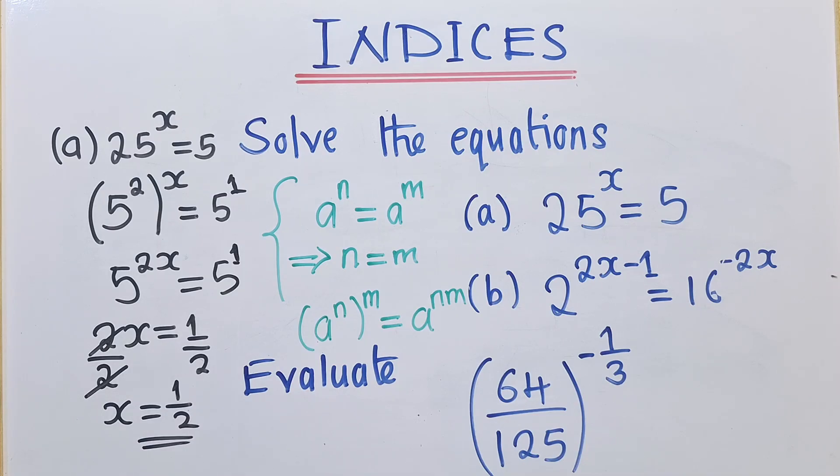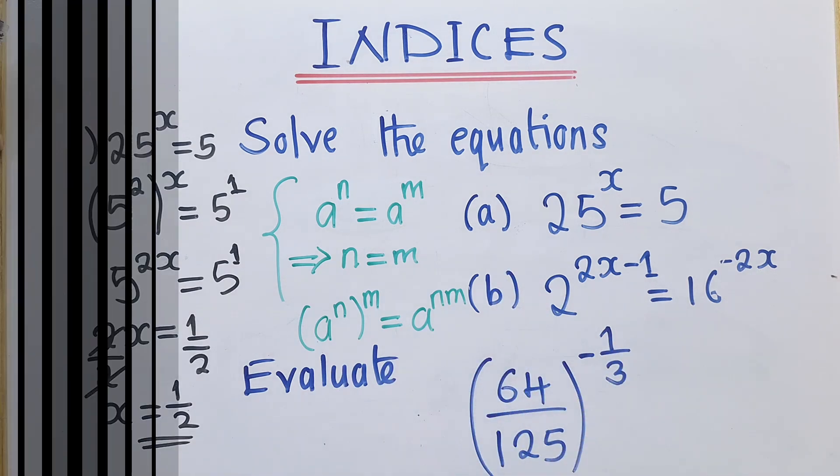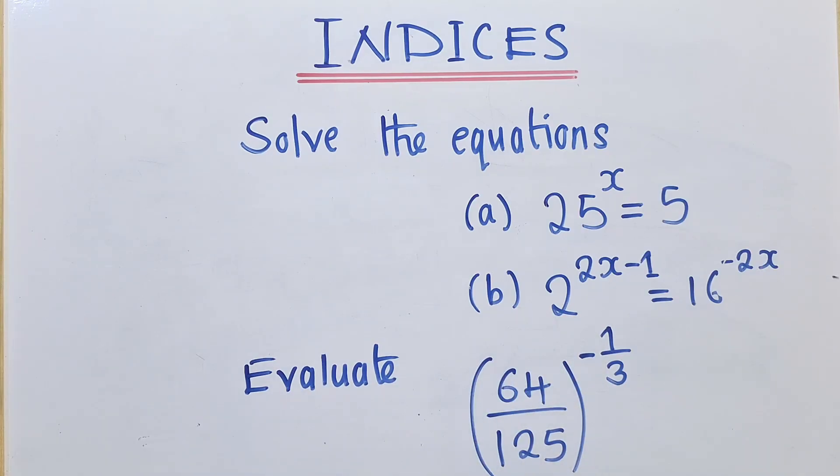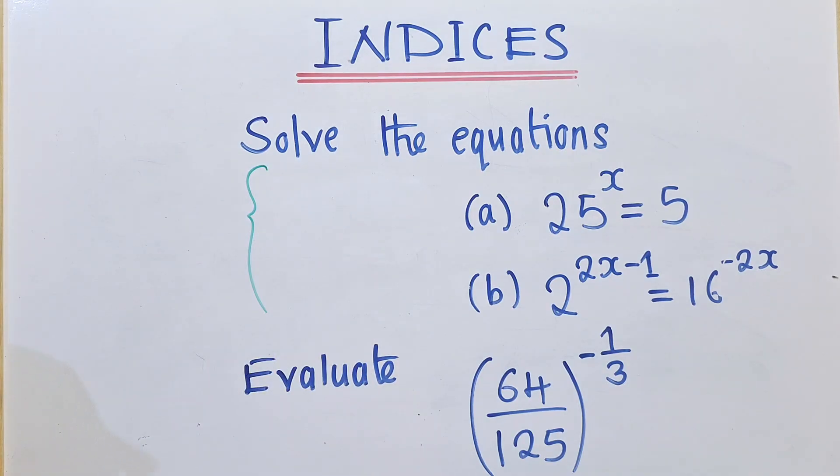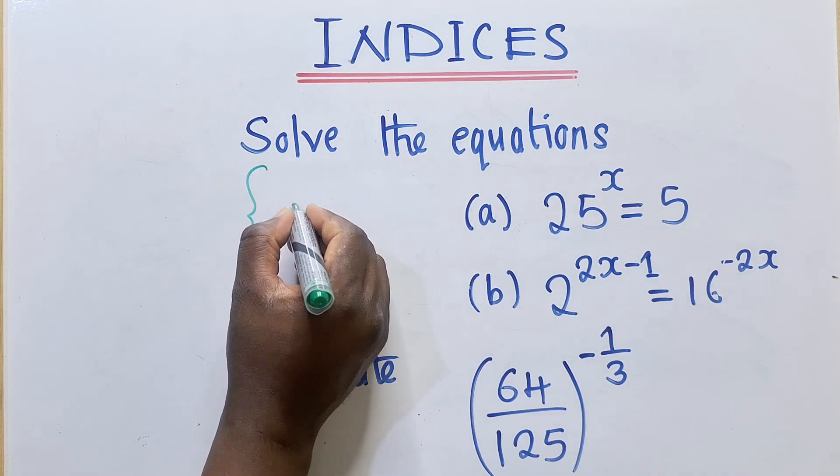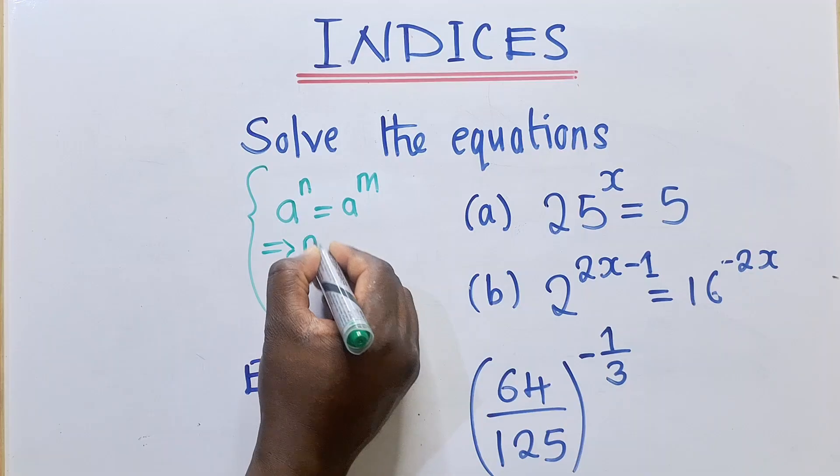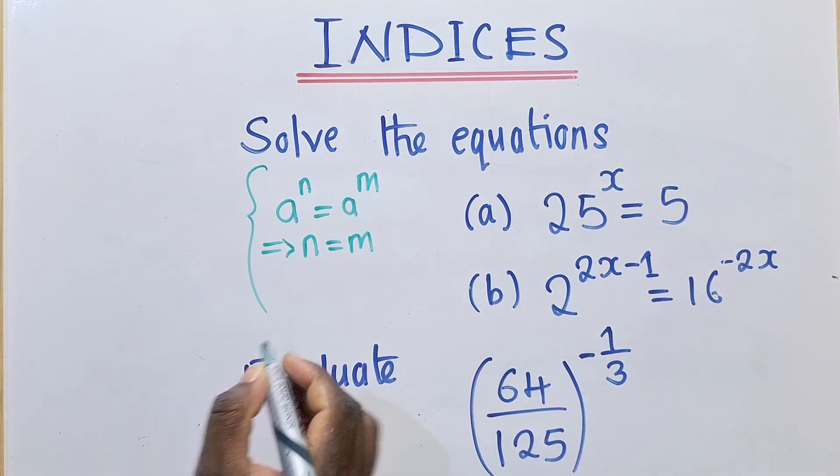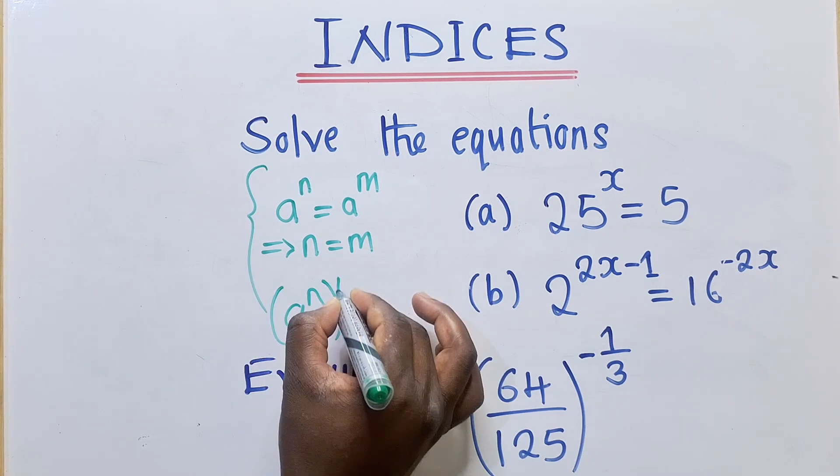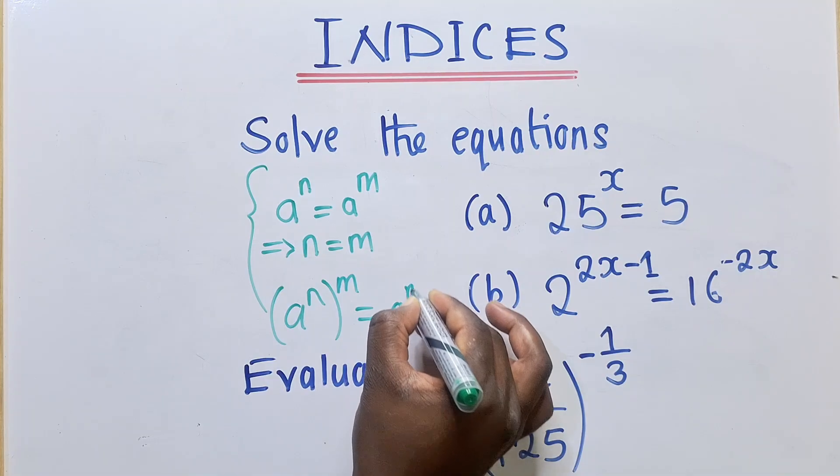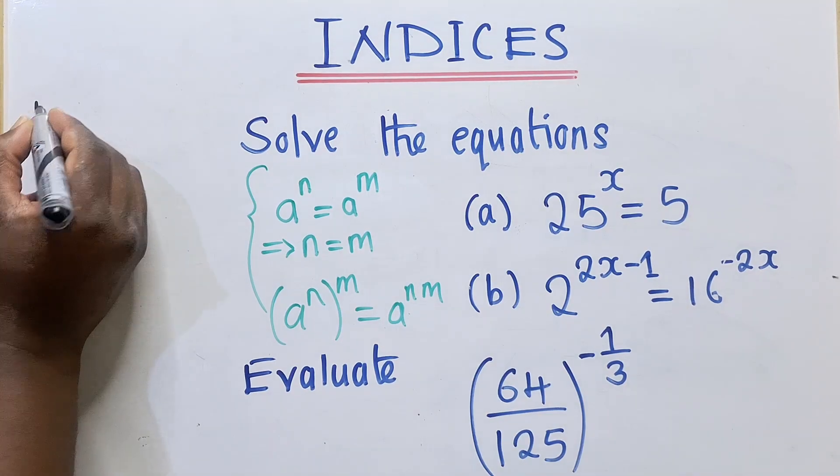Now let's go to question B and see what we're supposed to do on question B right over here. So for question B, we also need to apply the property. So the same property that we had right here. Which says that when we have A power N is equal to A power M, this simply means N is equal to M. So we need this property and also the power property which says that when we put A power N, the brackets power M, this is equal to A power N M. You multiply the powers. It's needed right here.